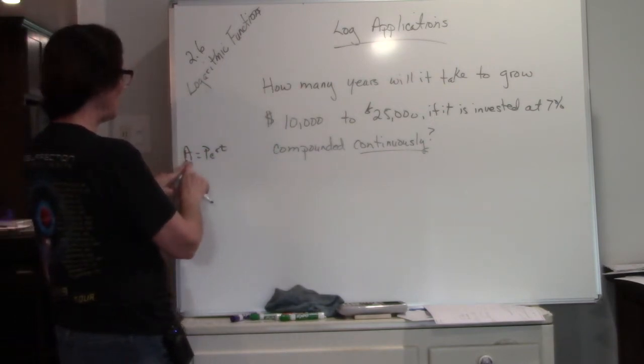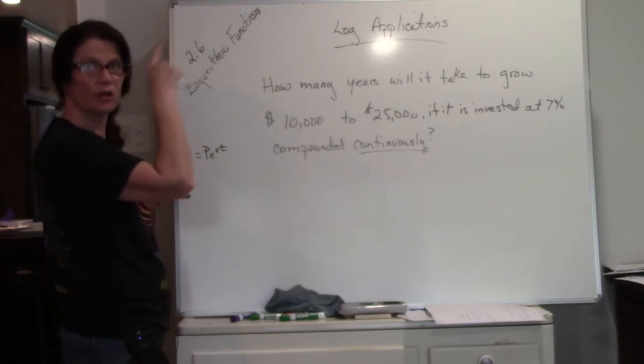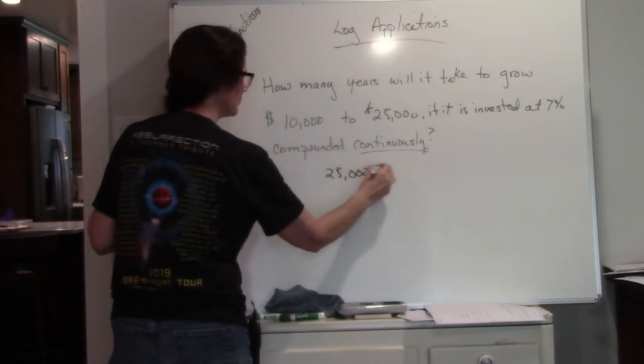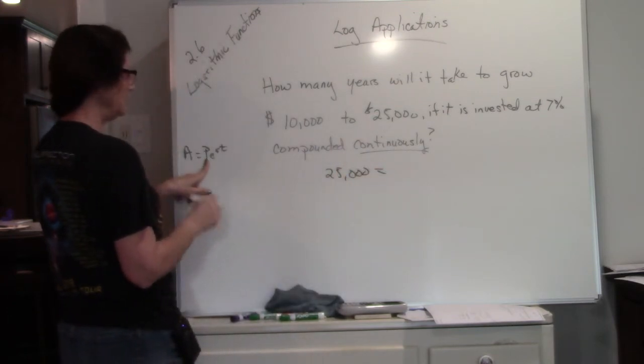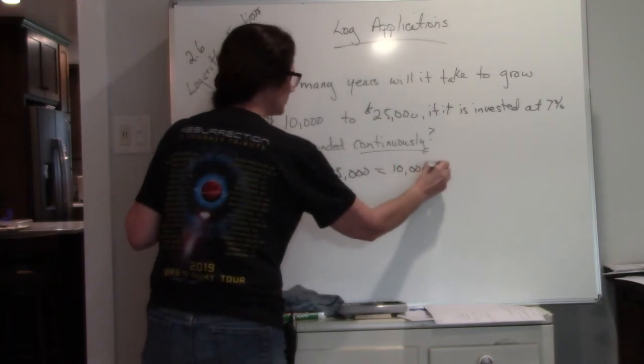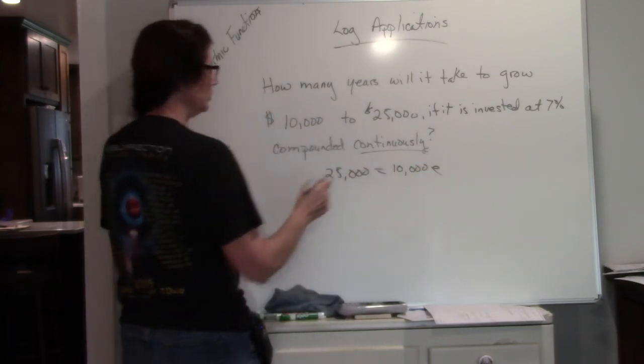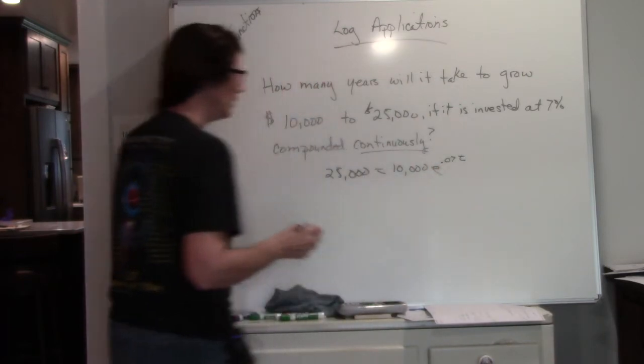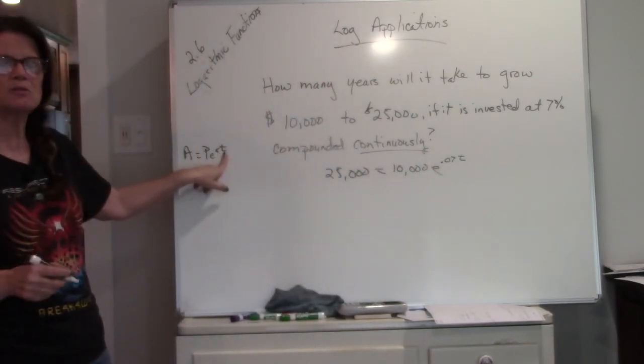So remember, A is what we're going to, it's our ending amount. So we want to end at $25,000. We began, our P is our beginning amount. We began with $10,000. E is our natural number. Our rate is 7%, so we're changing it to a decimal. And our time is what we're looking for.